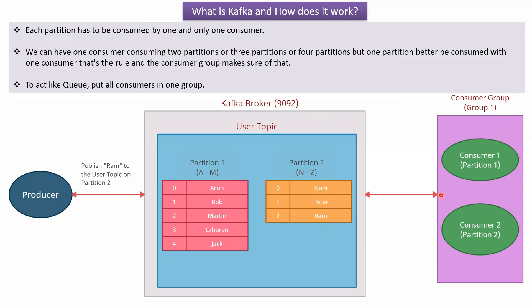To act like a queue, we have to put all the consumers in one group. In this scenario, the username Arun will be consumed only once by consumer 1, because consumer 1 is responsible for partition 1. Arun won't be consumed by consumer 2 because consumer 2 is responsible for partition 2. So the message is consumed only once — this is an example of a queue.